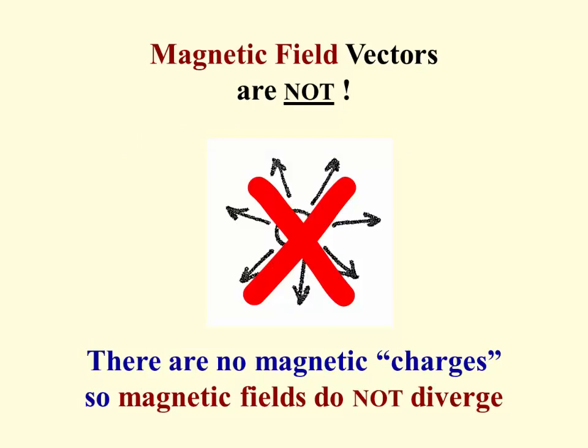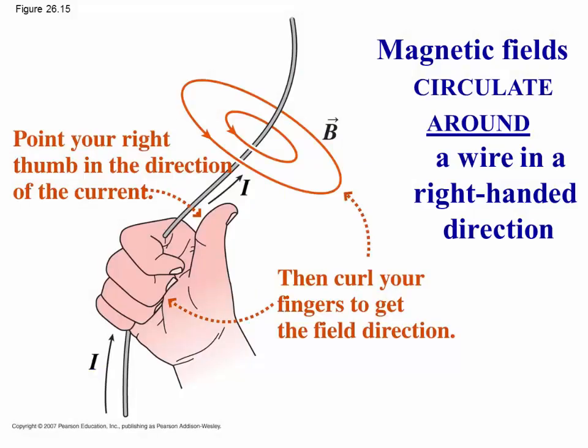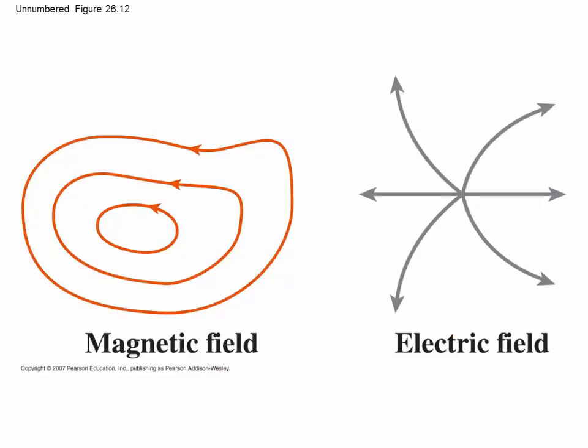The reason is there is no magnetic charge, like a little individual north, that would produce a magnetic field. Magnetic fields do not diverge from any source charge. Instead, they circulate around a wire in a right-handed direction. I won't say much here because we'll focus our time in class on this idea. But get this picture straight in your mind. Magnetic fields form closed loops around that source current.